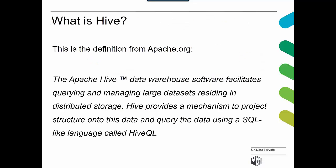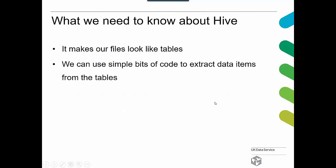So what is Hive? Using the official definition from Apache.org: the Apache Hive data warehouse software facilitates querying and managing large datasets residing in distributed storage. Hive provides a mechanism to project structure onto this data and query it using an SQL-like language called HiveQL. What that means for us is that Hive will make our files look like tables, and we can use simple code to extract data items from those tables and reduce the size of the data files.